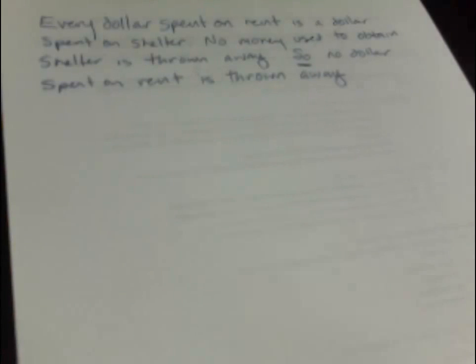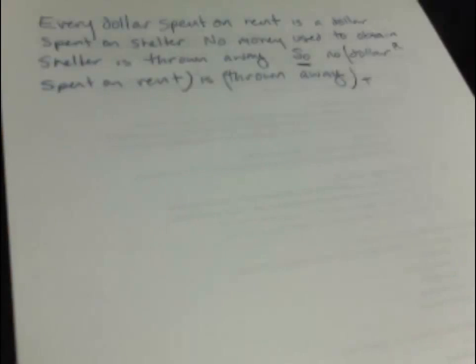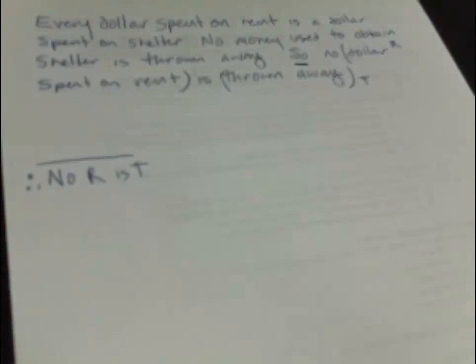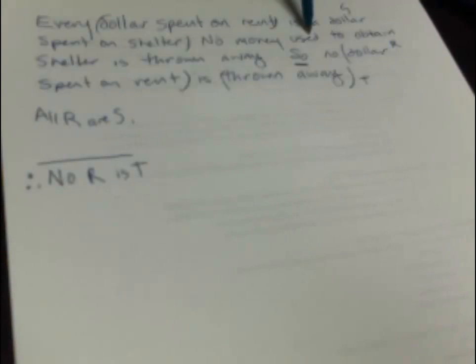The word 'so' is the conclusion indicator, so our last sentence is the conclusion: no dollar spent on rent is thrown away. We need R to represent dollars spent on rent, and T to represent things that are thrown away. The conclusion is: no R is T. For the premises: every dollar spent on rent is a dollar spent on shelter means all R are S, where S is dollars spent on shelter. The second premise, no money used to obtain shelter is thrown away, becomes: no S is T.